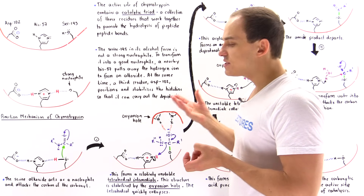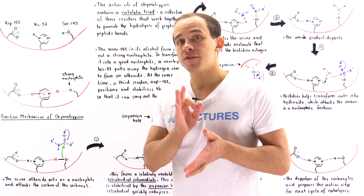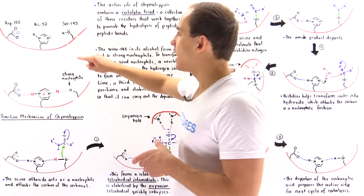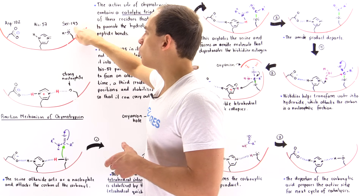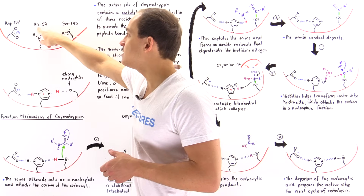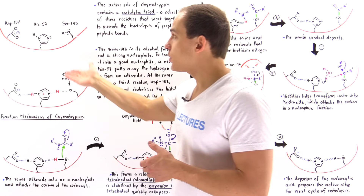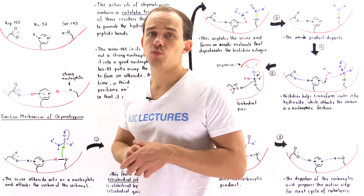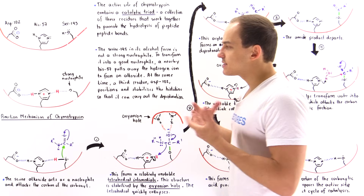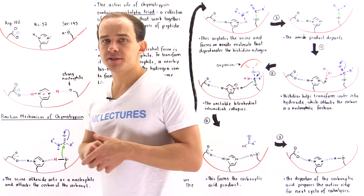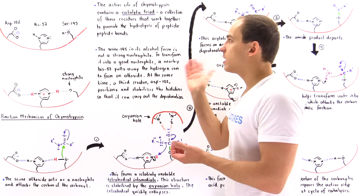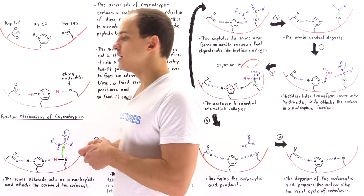This catalytic triad consists of three different amino acids: serine-195, histidine-57, and aspartate-102. Let's begin by discussing the role that each one of these amino acids actually plays in promoting the hydrolysis of peptide bonds.